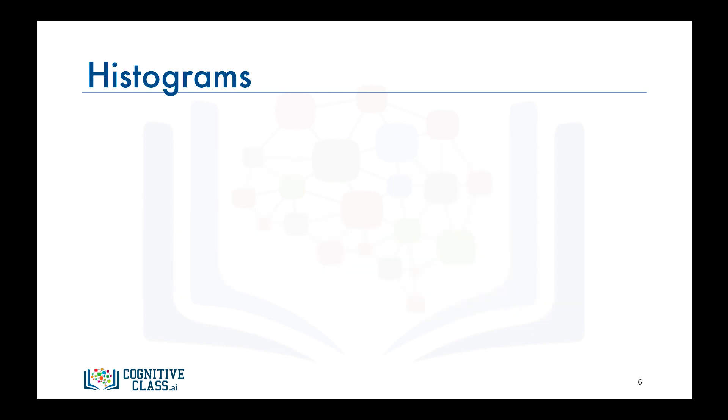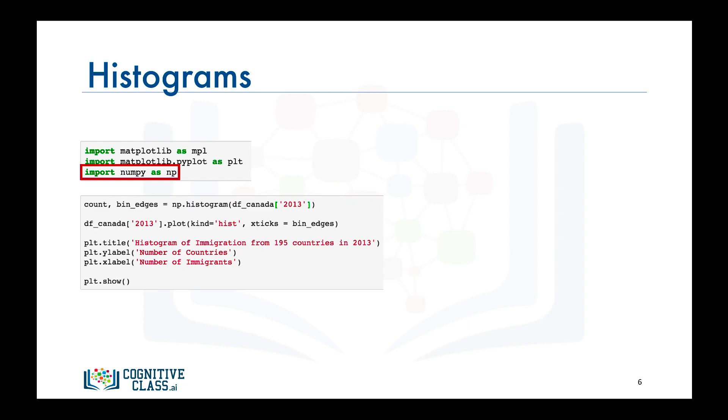One way to solve this issue is to borrow the histogram function from the numpy library. So as usual, we start by importing matplotlib and its scripting interface, but this time we also import the numpy library. Then we call the numpy histogram function on the data in column 2013.